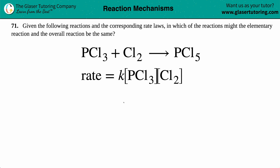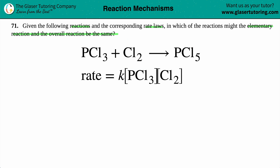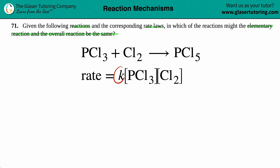Number 71. Given the following reactions and the corresponding rate laws, in which of the reactions might the elementary reaction and the overall reaction be the same? We have one reaction: PCl3 plus Cl2 yields PCl5, and we are given its rate law — rate equals K times PCl3 times PCl2.